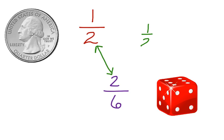One half times two sixths. Now, you'll notice right away that we can simplify. One and one. So the probability of this compound event is one out of six.